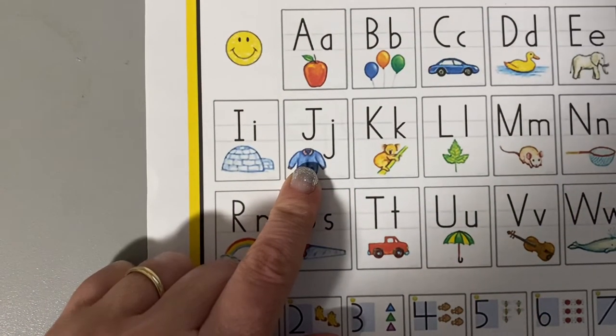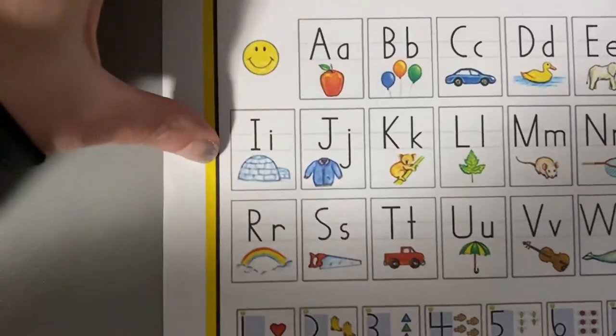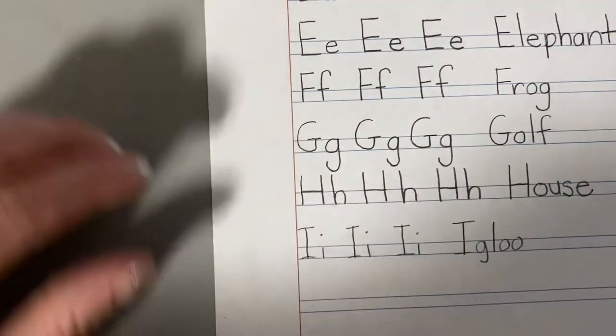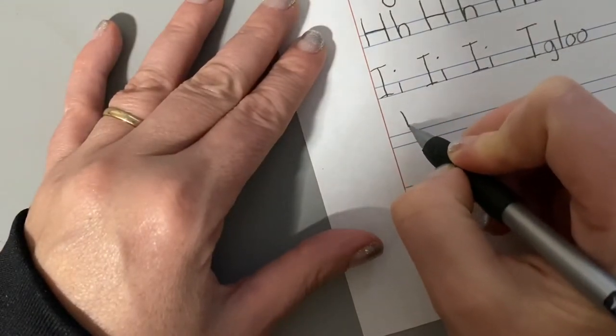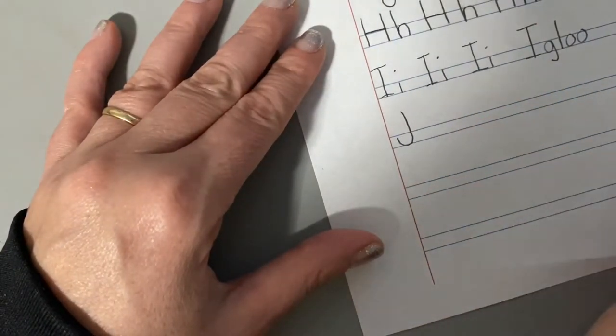Today we're going to write the letter J using the Handwriting Without Tears letter formation. So all of our letters start up at the top and J has a line down and a curve at the bottom.